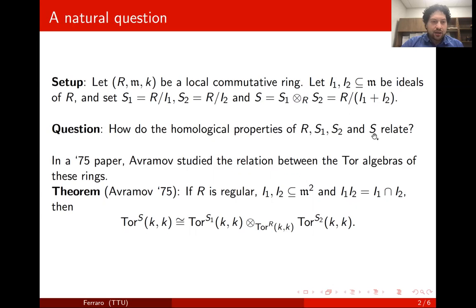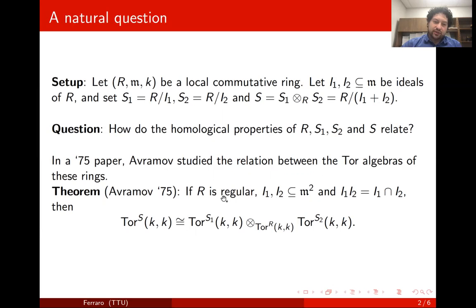In 1975, Avramov was interested in how the Tor algebras of these four rings relate, and he proved the following theorem. He proved that if R is a regular ring, and if these ideals are contained in the square of the maximal ideal, and moreover if the product of I₁ and I₂ equals their intersection, then one has a nice isomorphism of Tor algebras. He actually proved something more — his theorem holds under more general hypotheses and shows a spectral sequence relating these algebras, but under these hypotheses the spectral sequence collapses and you have this isomorphism.